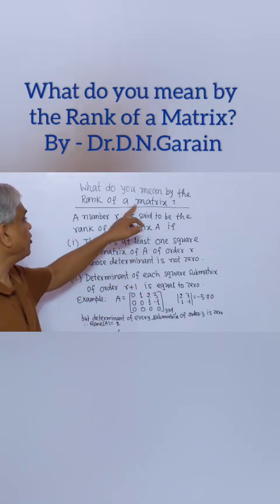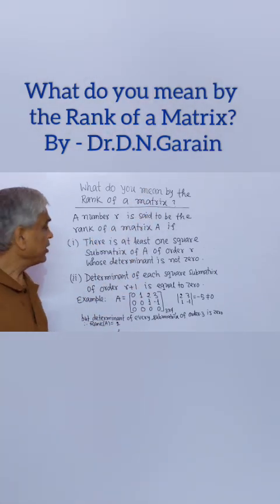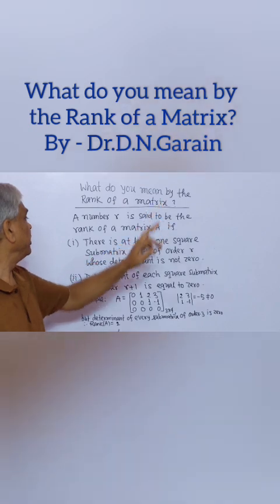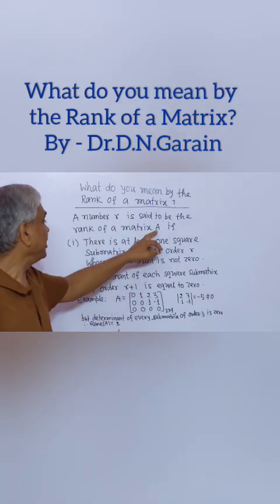What do you mean by the rank of a matrix? A number, small r, is said to be the rank of a matrix, capital A, if: